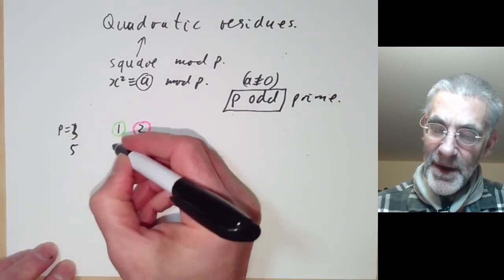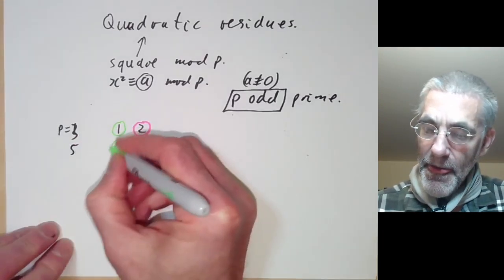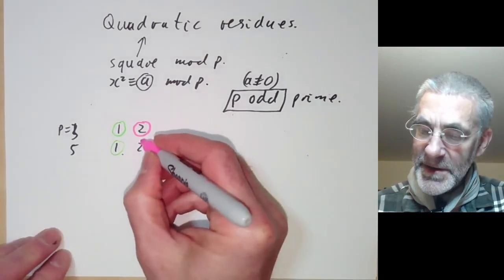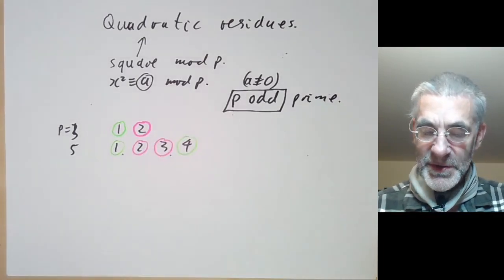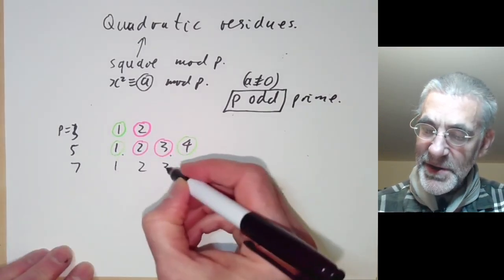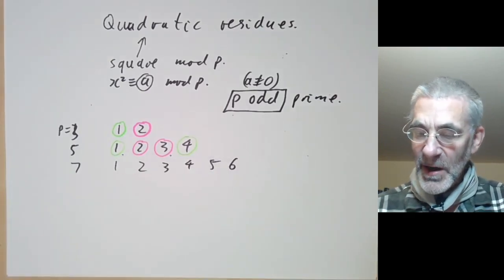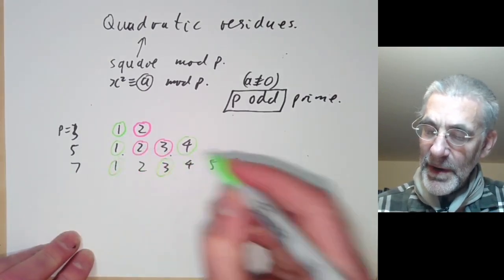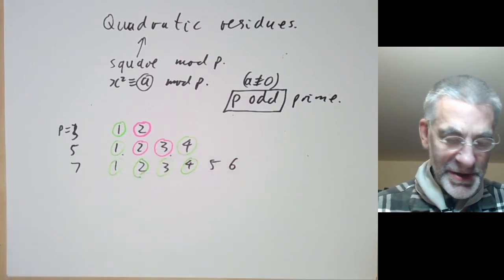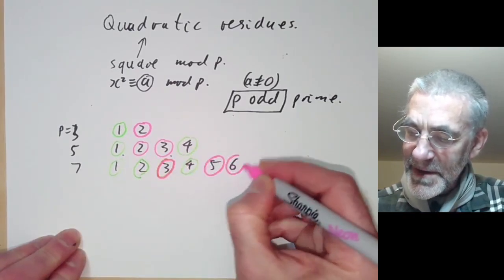For p equals 5, the squares are 1 and 4, and the non-squares are 2 and 3. For p equals 7, the quadratic residues are found by squaring 1, 2, and 3, giving 1, 4, and 9, which is 2. The ones left over are 3, 5, and 6.